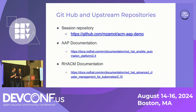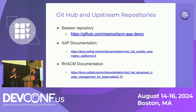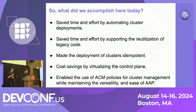Thank you, Mike and Mike, for all that great information. There you have it, folks — we have multiple clusters deployed automatically by a single Git commit. We were also able to see existing Ansible playbooks work side-by-side with ACM policies to complete all deployments and post-deployment tasks. To recap: we made a single unified workflow for deploying and managing OCP clusters utilizing ACM, AAP, and Git. We saved time and effort by automating deployment and reutilizing legacy code. We made the deployment process idempotent, enacted cost savings by virtualizing the control plane, and enabled the use of ACM policies for cluster management while maintaining the versatility and ease of AAP.